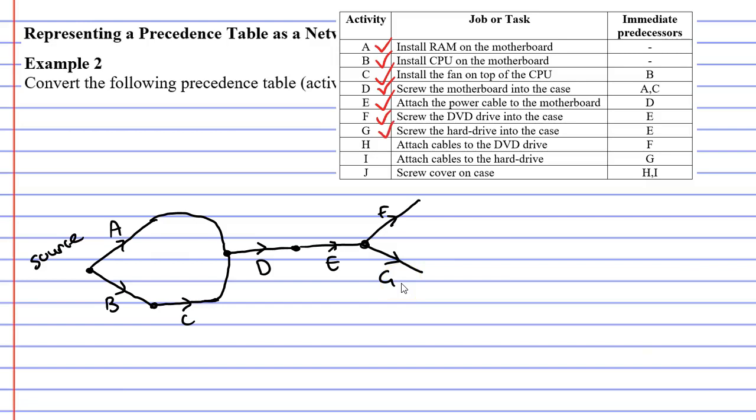Now moving on to activity H. Activity H comes after activity F. So we need to finish activity F and draw an edge to represent activity H and also tick activity H. Next we have activity I which comes after activity G. So we finish activity G with a vertex and draw an edge to represent activity I.